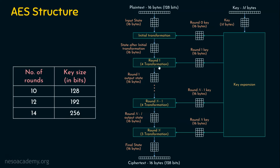Now, what is happening inside every round? We can see there is an initial transformation requiring a round key, and round one having four transformations also requiring a round key. Let's turn our attention to what is happening inside every round and inside this initial transformation, so we understand how plaintext is converted into ciphertext — and also the reverse: how ciphertext is converted back to plaintext. This is exactly AES encryption and decryption.